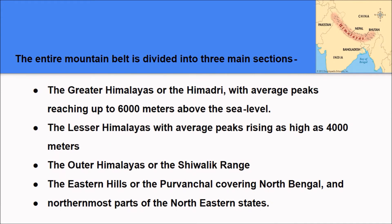The third Himalayan ranges are the outer Himalayas, also known as the Shivalik ranges or Shivaliks. It is the outermost range of the Himalayas, made up of tertiary sedimentary sediments brought by rivers from the main Himalayan ranges. These ranges are narrow and discontinuous and are well developed only in the western Himalayas. The average height varies from 900 meters to 1,500 meters. The Shivaliks at certain places are separated from the middle Himalayas by flat-bottomed valleys known as Duns — such as Dehradun, Kotlidun, and Patlidun.